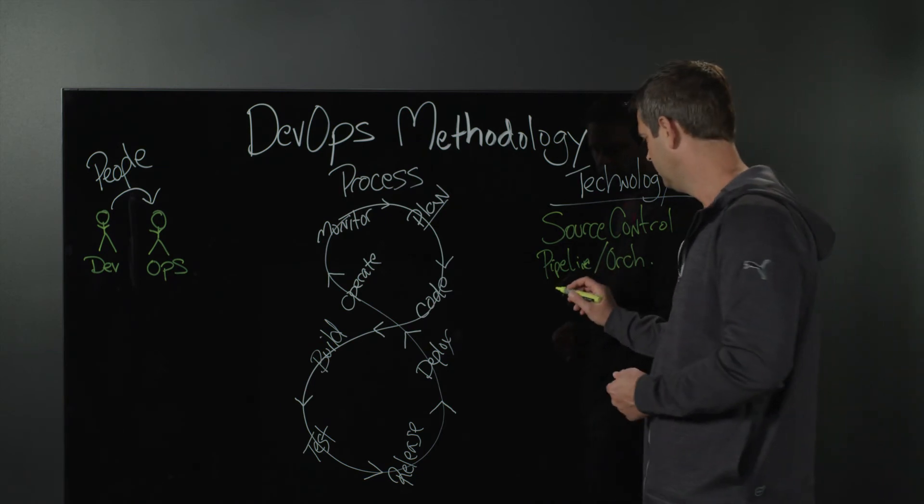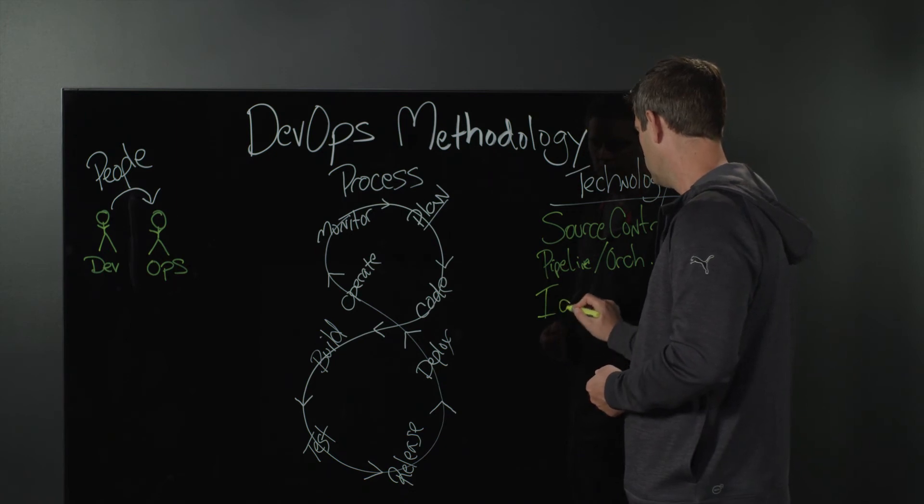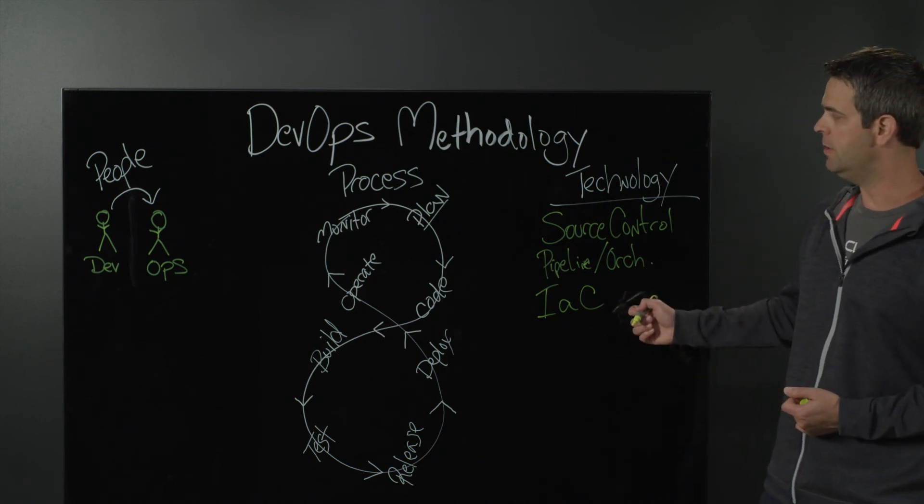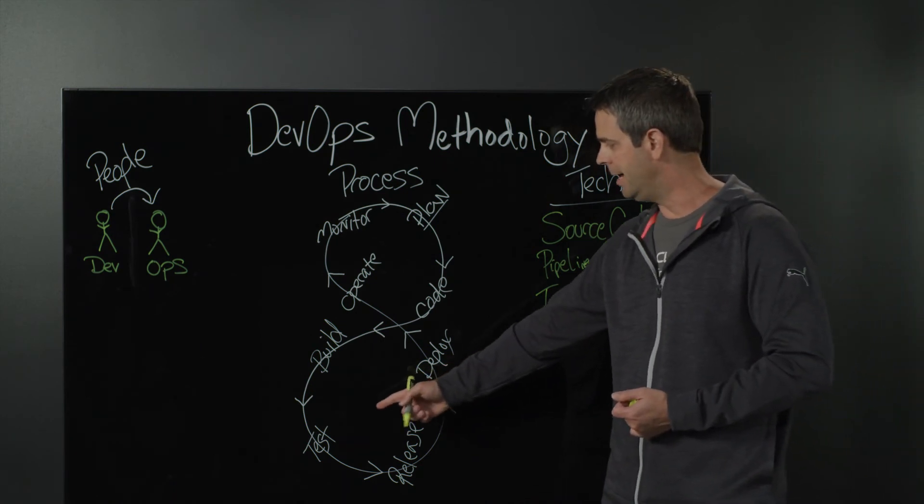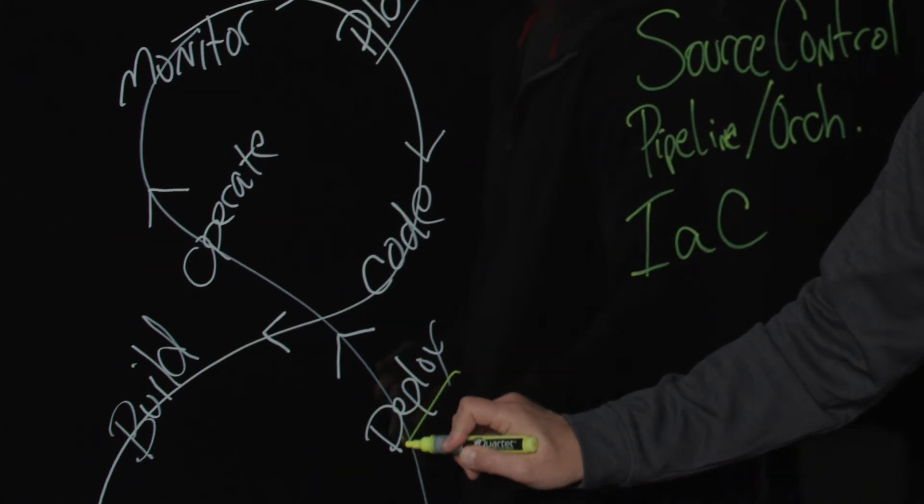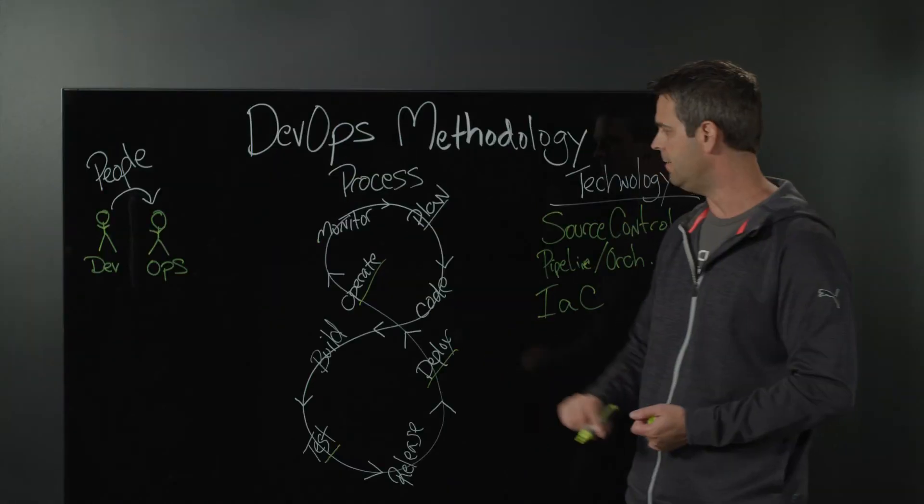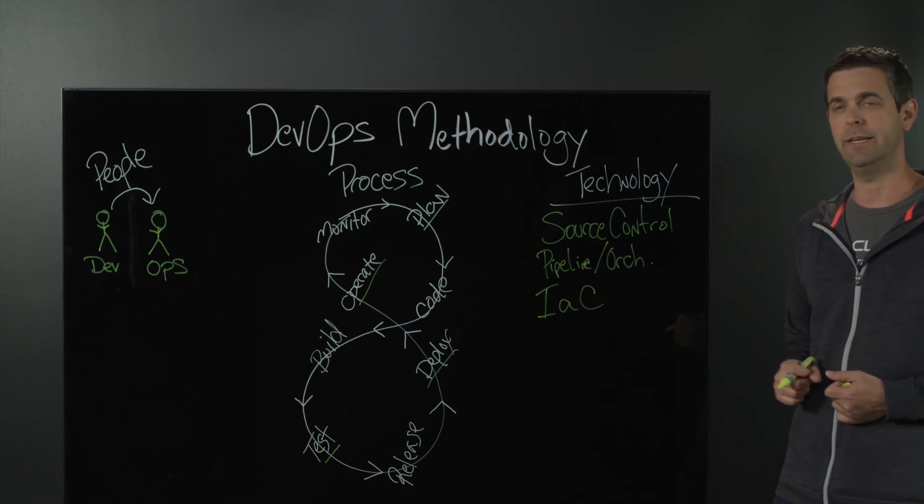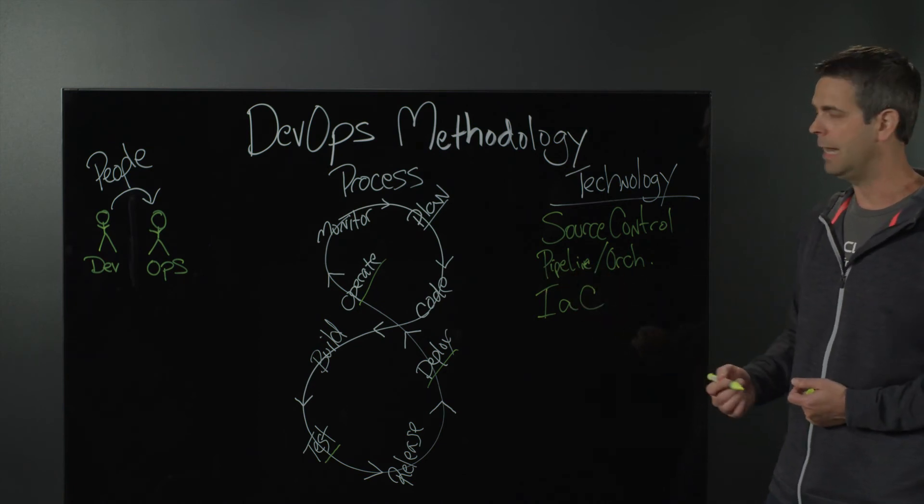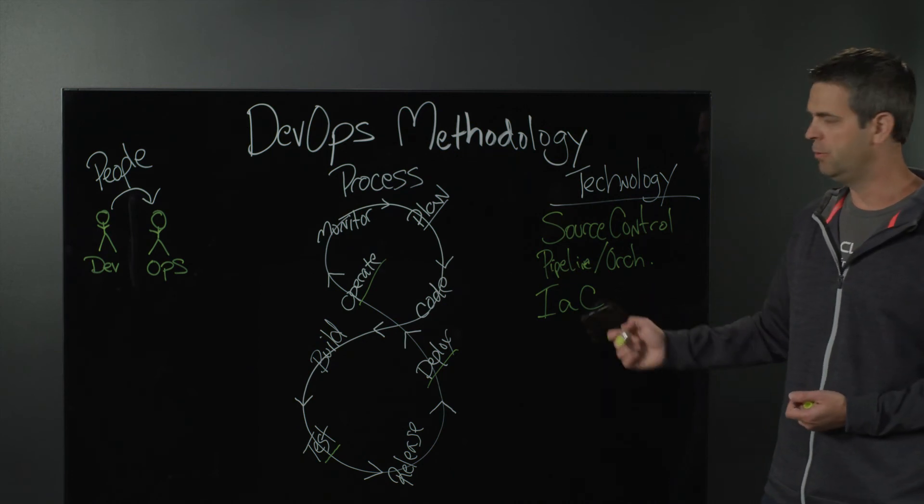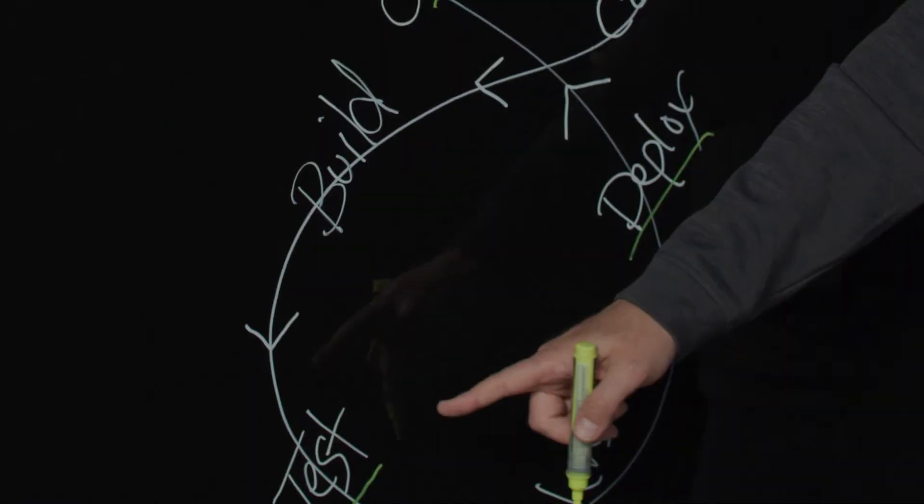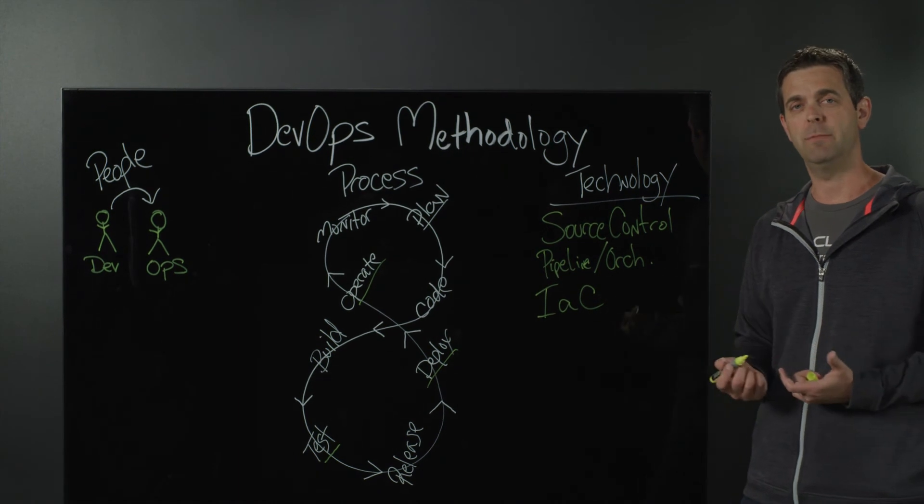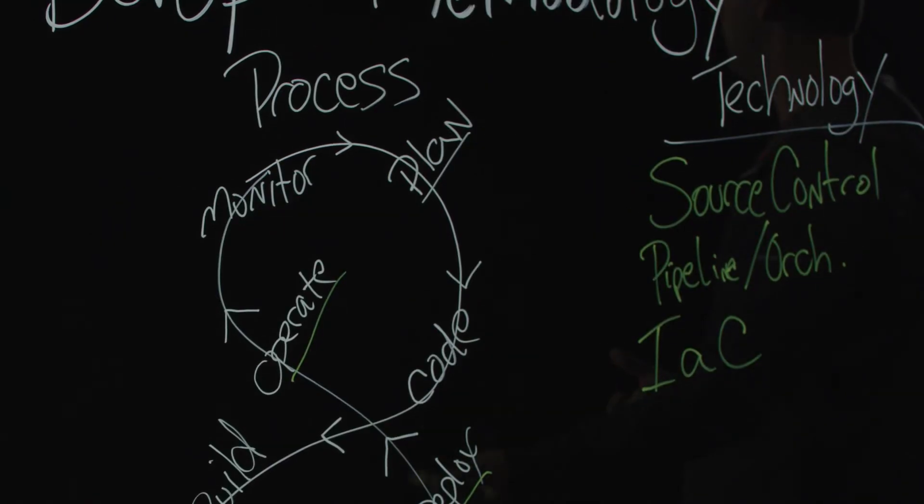The next piece, potentially, is infrastructure as code, or IAC, as it's often abbreviated. Infrastructure as code is going to help us with potentially the test phase, the deployment phase, and possibly even the operate phase. This is where we actually get to write code that will provision our infrastructure or modify existing infrastructure in response to an application code change. Infrastructure as code tools like Terraform are very popular, especially in the test phase, because that gives us the ability to generate test environments on the fly, deploy code, test code, and then destroy the environment.